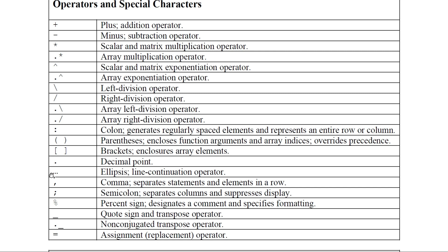Comma is used to separate elements. Semicolon is used to terminate a row in a matrix — for example, [1 2 3; ...] puts the next number on the next row. In the command window, a semicolon suppresses display: if you type a = 1 and press Enter it displays the value, but if you type a = 1; then the value is not displayed, though a equals 1 in the workspace.